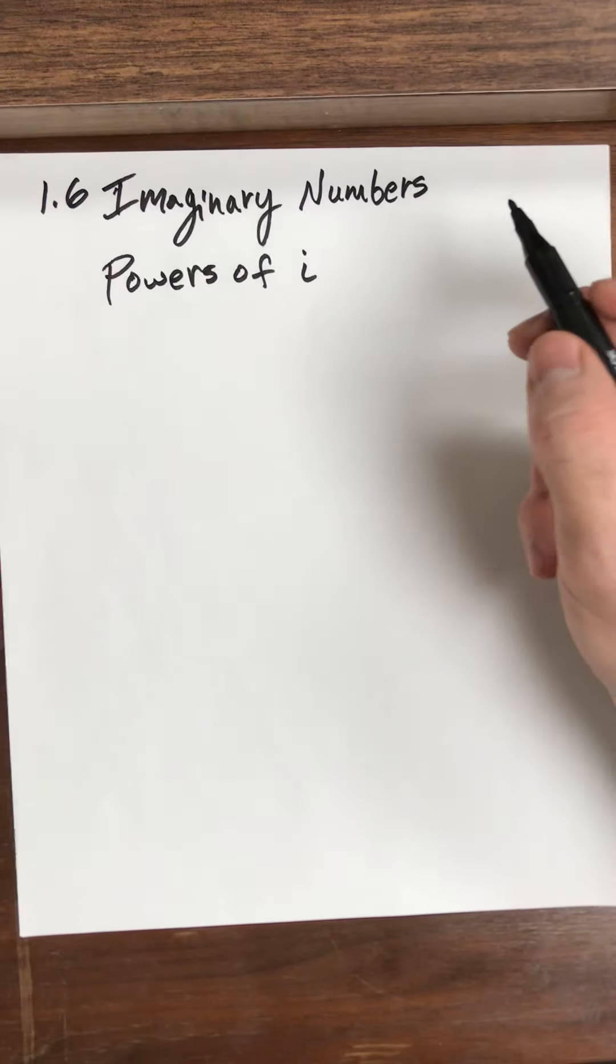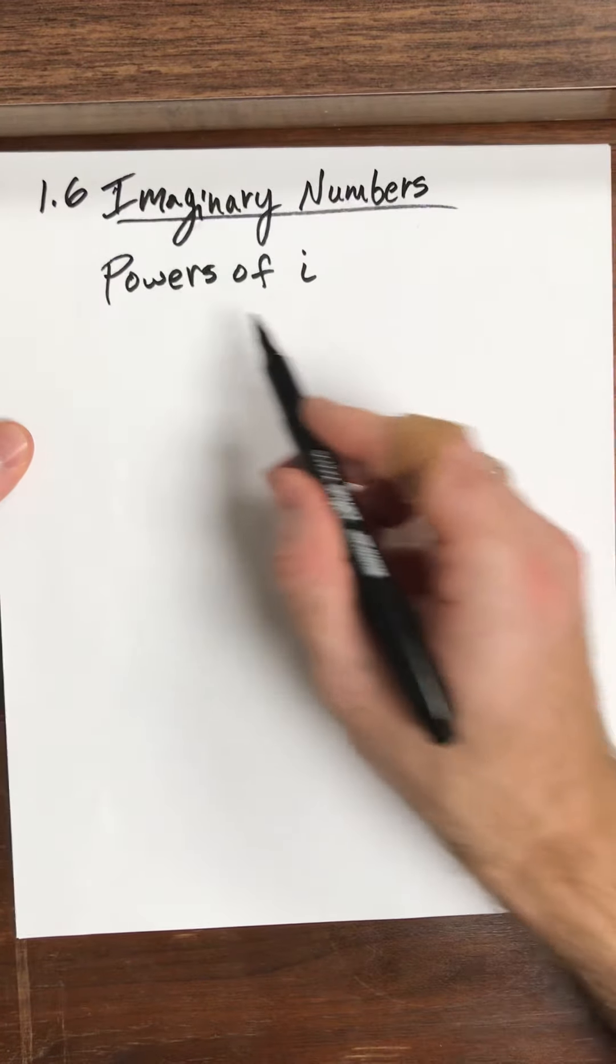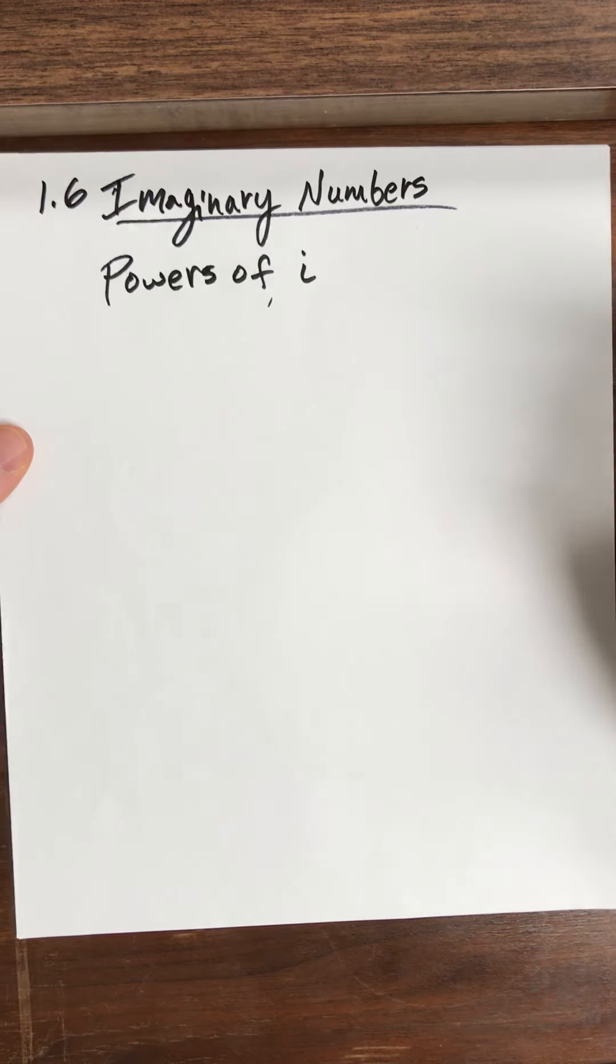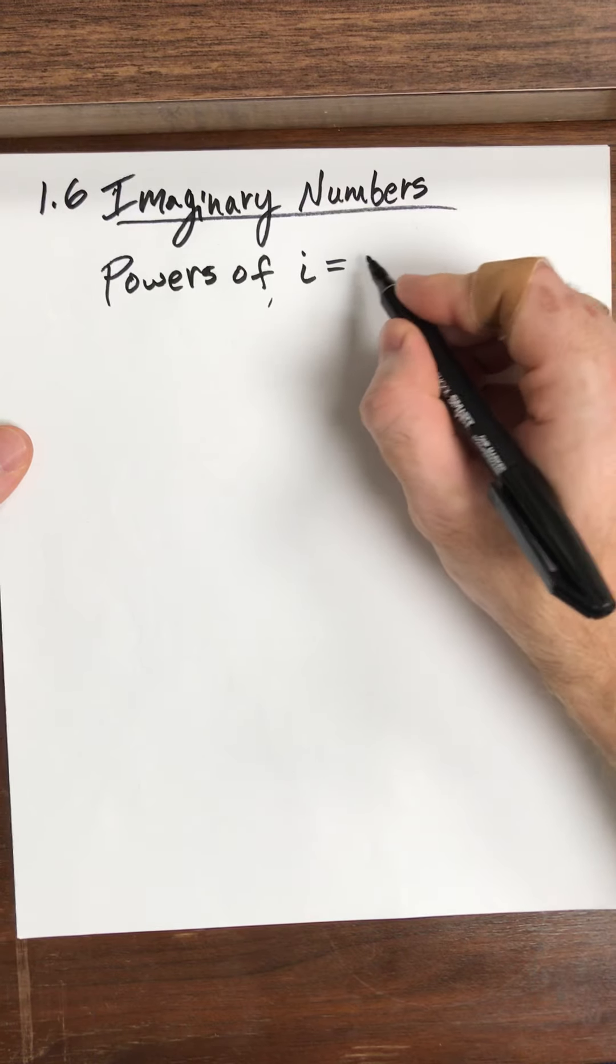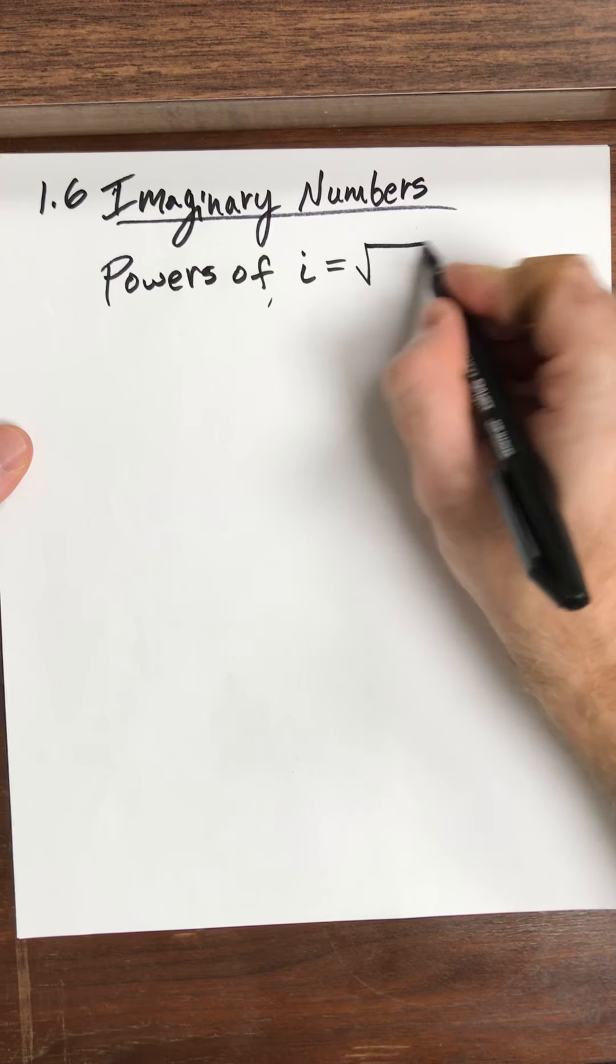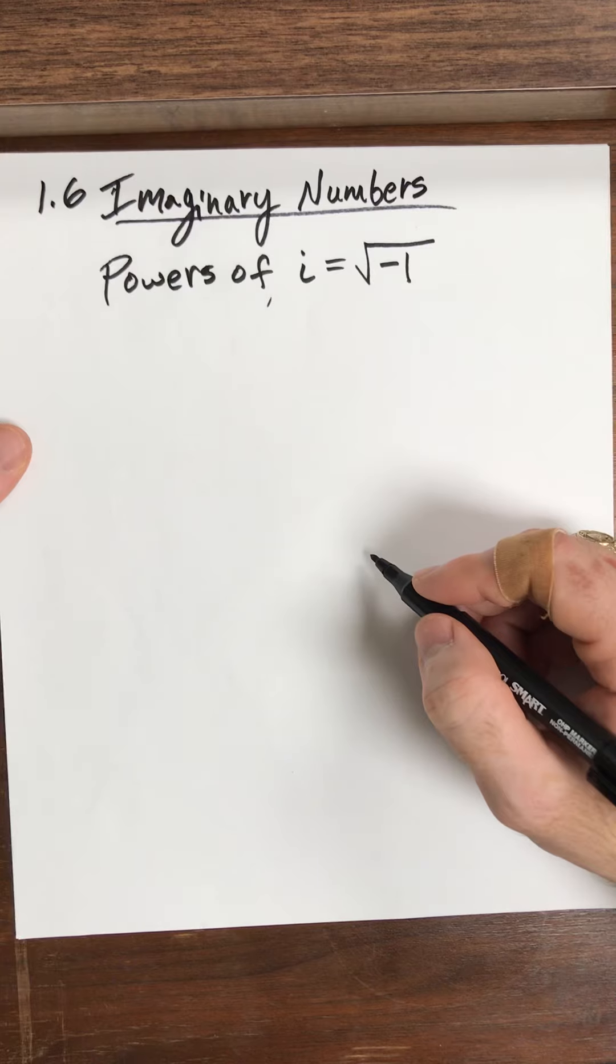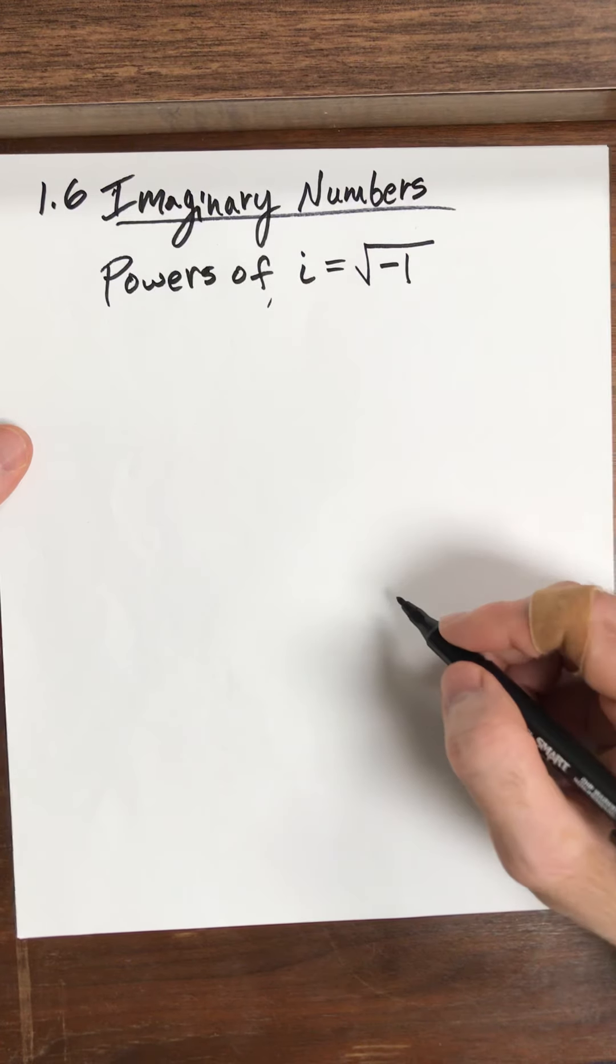Okay, so 1.6, we're going to talk about imaginary numbers and then powers of i. So what is i? i is defined to be the square root of negative 1. The square root of negative 1, that's what it's defined to be.